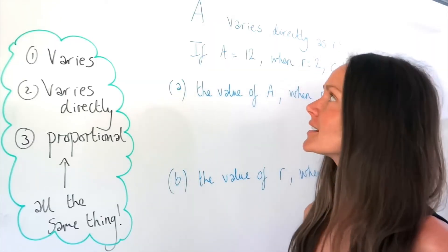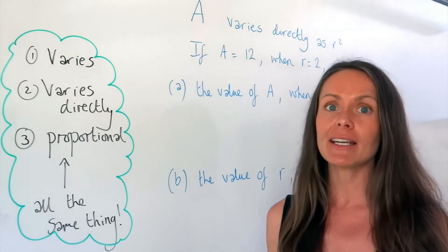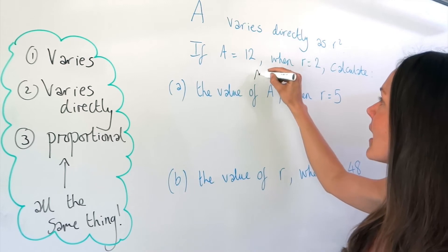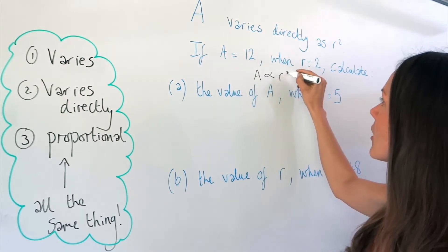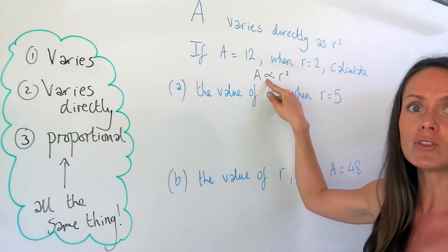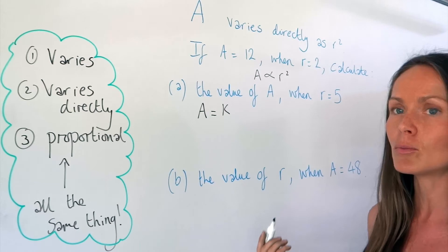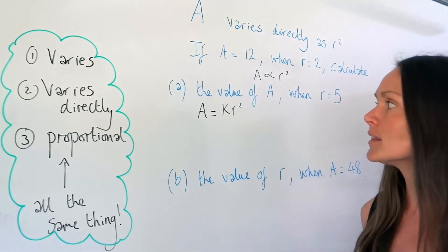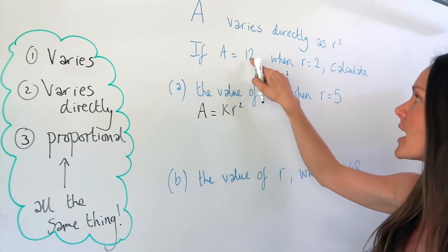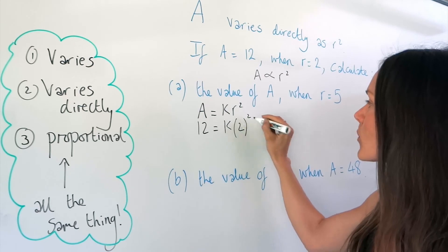Alright, so in this second example, it says that a varies directly as r squared. Remember, varies directly is just the same as proportional, just like in the last example. So I'm going to start by writing down a, and then that proportional symbol with the r squared, just to show the connection between a and r. So we need to change that symbol to an equal sign, but when we change that to an equal sign, we need to now include a constant, which we call k. So I've got 2 squared there, because r is 2 and a is 12.